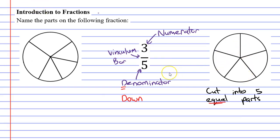You'll notice that our denominator, which is 5, is the same as the number of equal parts that our circle has been cut into. The denominator tells you how many parts it has been cut into.